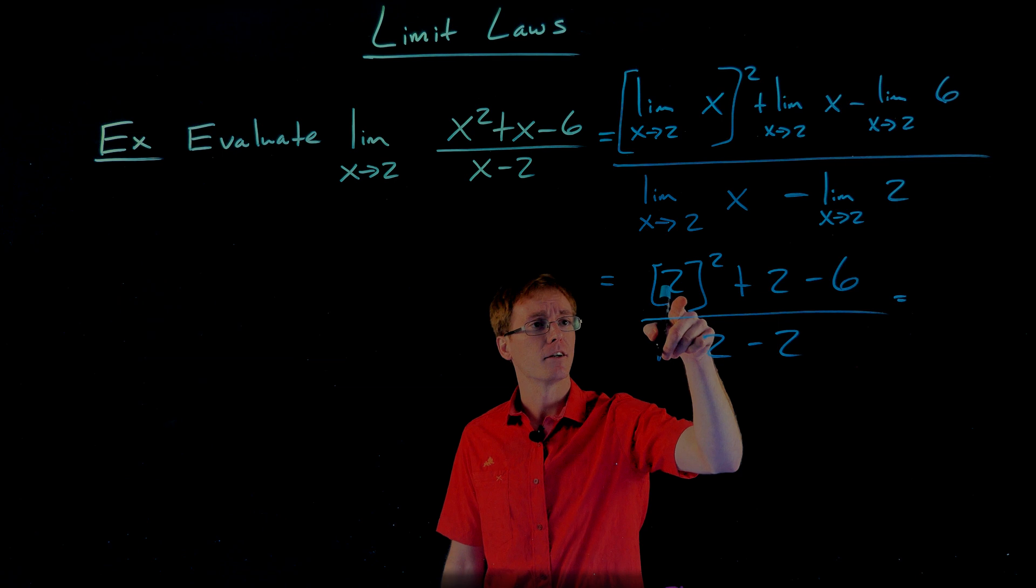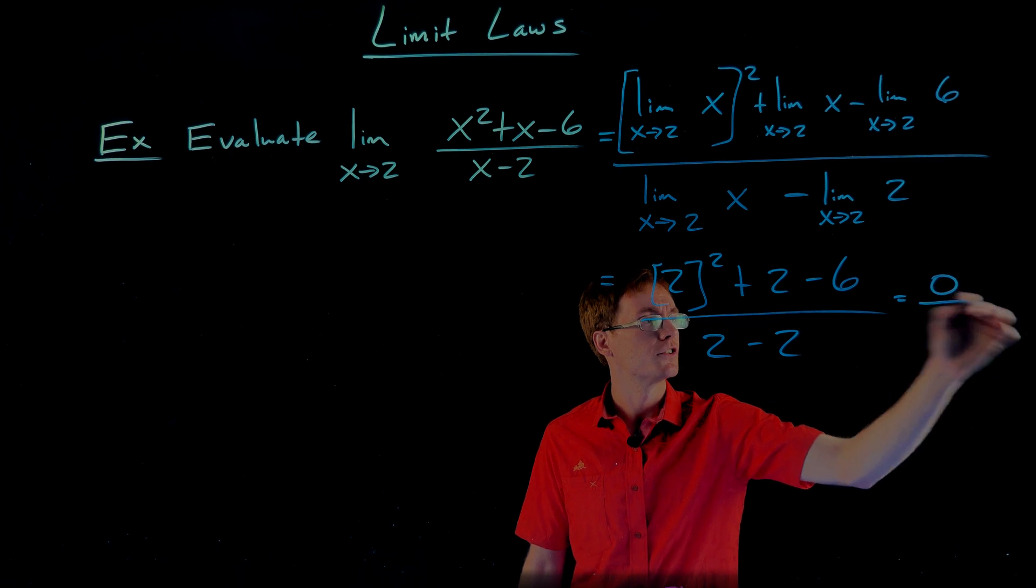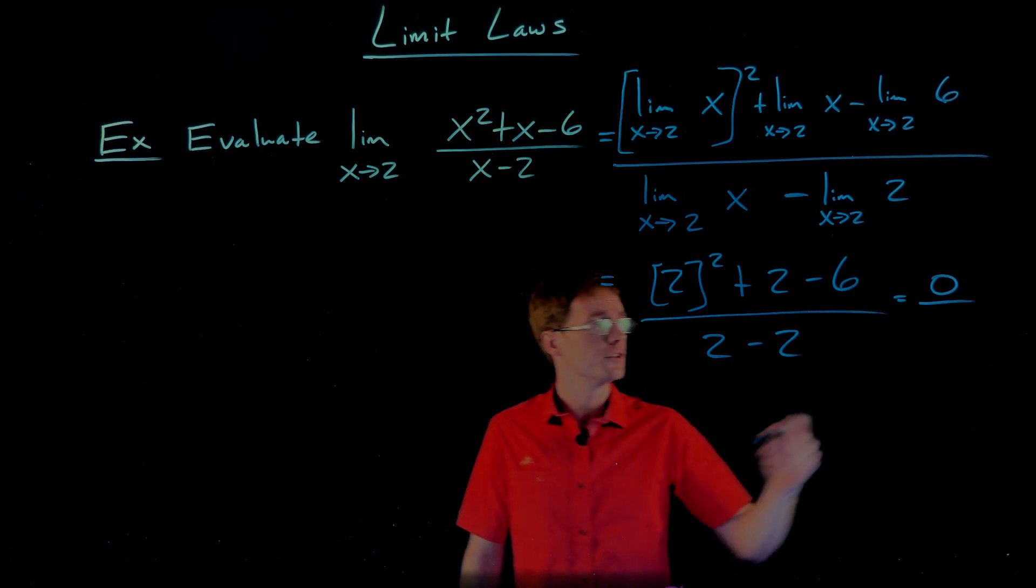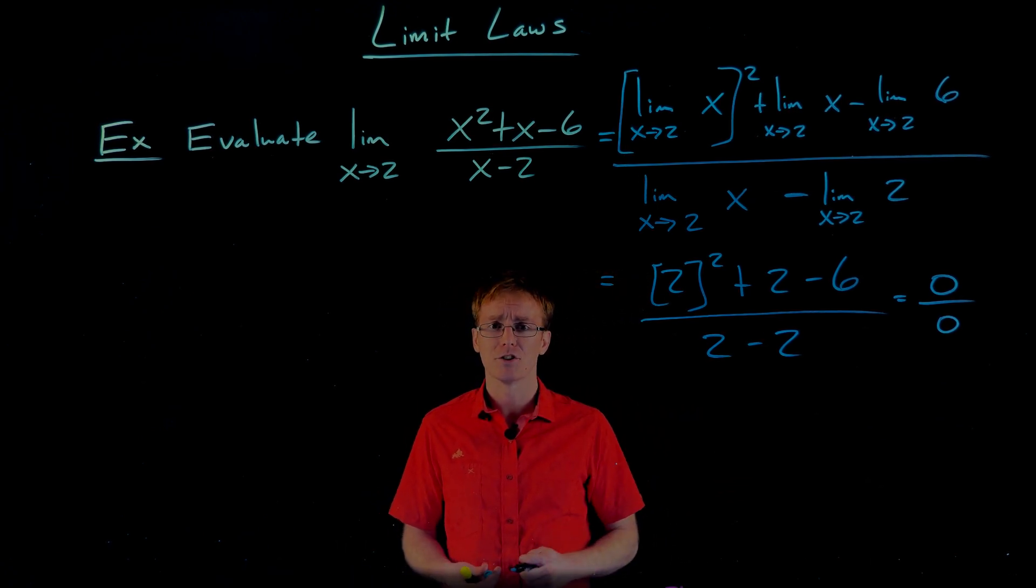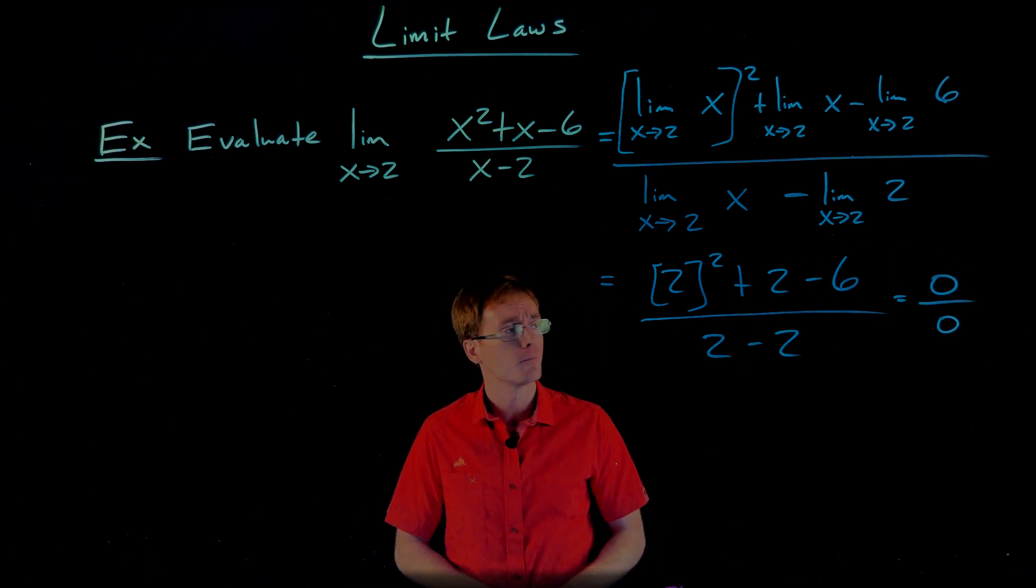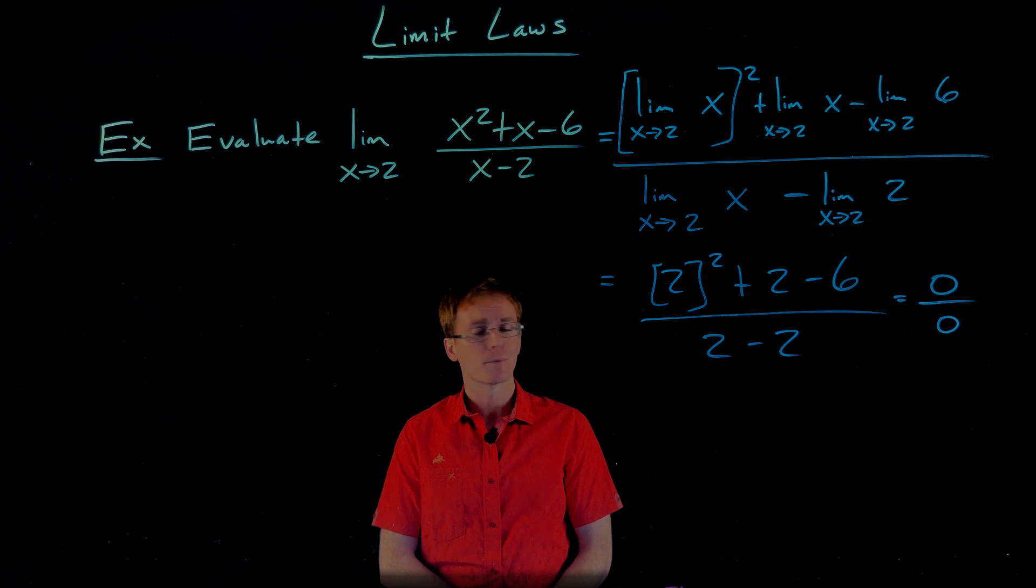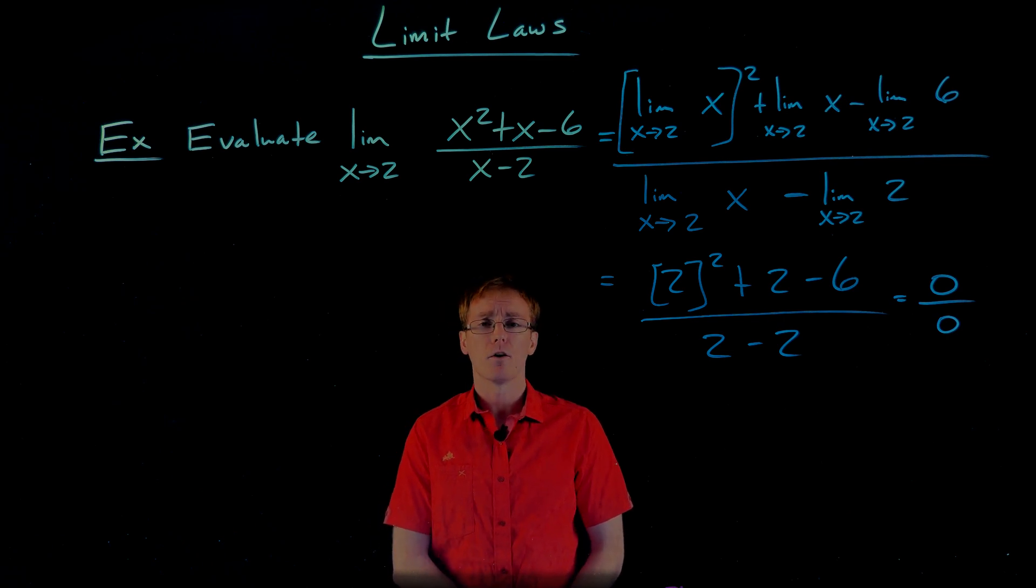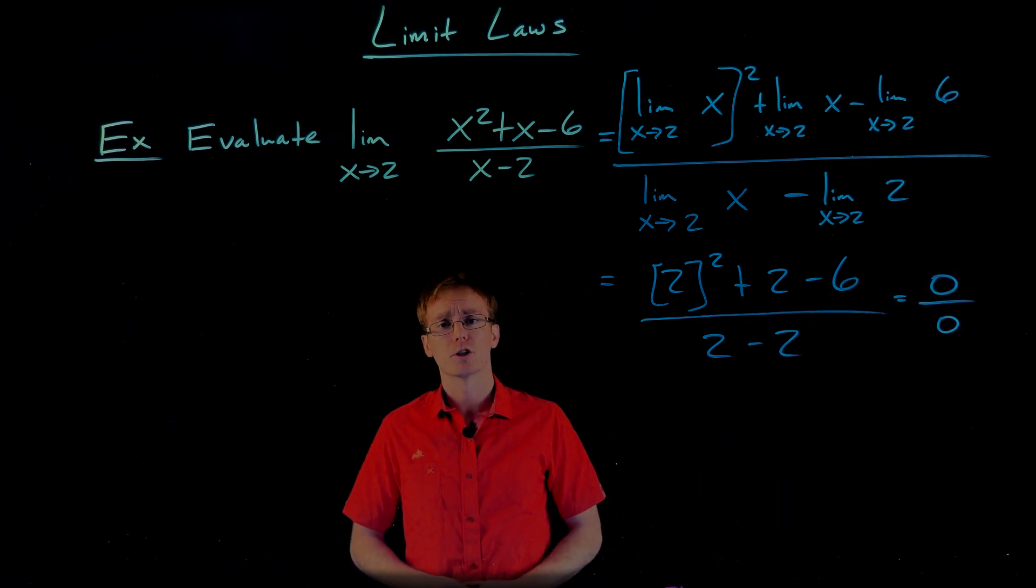So now if we evaluate the numerator, we have 2 squared, which is 4, plus another 2 is 6, minus 6 gives us 0. And in the denominator, we get 2 minus 2, which is another 0. And you've probably seen it plenty in math classes. Division by 0 is undefined. In calculus, we're going to pay a bit more special attention to division by 0. This is a particular case where division by 0 is still undefined. But something kind of funny goes on. This is an example of what we call an indeterminate form. We're going to talk about these in a lot more detail later on. For now, just know that when you run into an indeterminate form, and for now it's going to look like 0 over 0, we have to approach it a little bit more carefully.